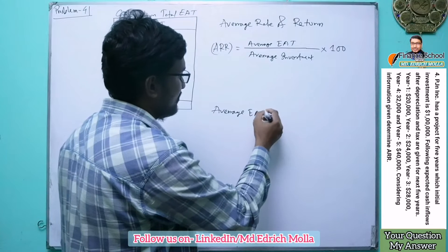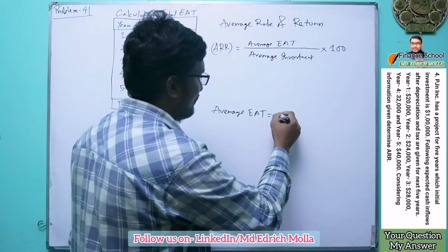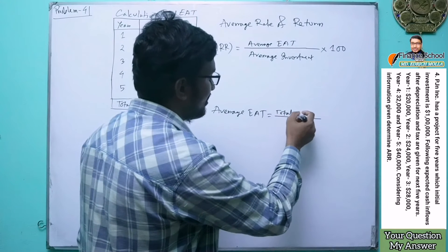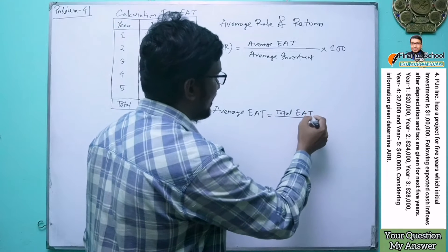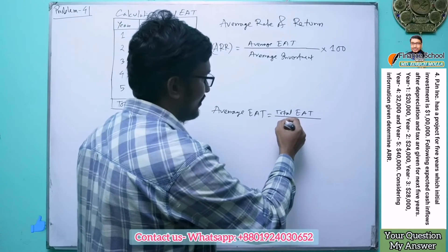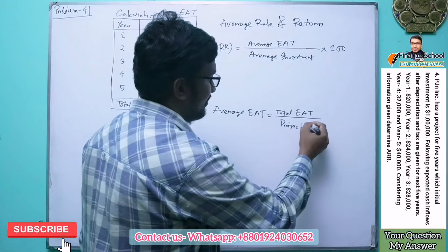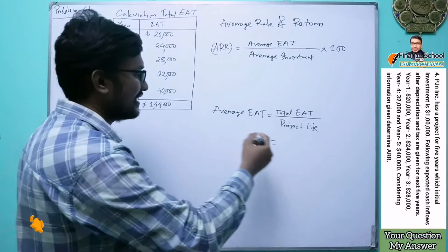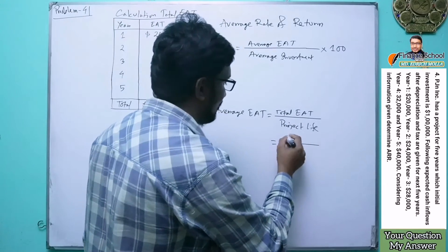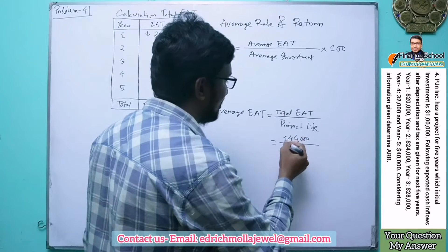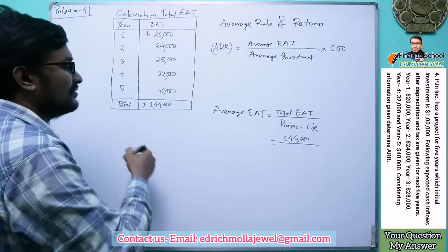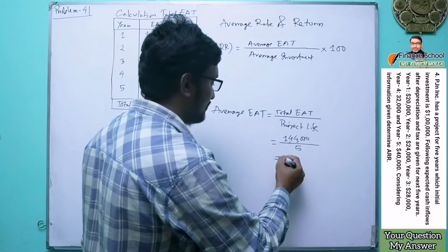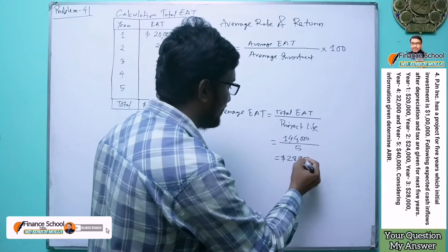Average Earnings After Tax is calculated as Total EAT divided by project life. Our total EAT is $1,44,000 and the project life is five years, so dividing gives us an Average EAT of $28,800.